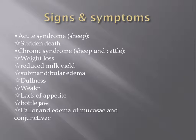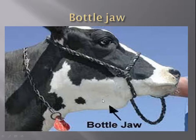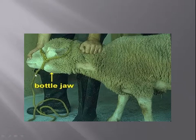There could be pallor and edema of mucosa and conjunctivitis. Here you can see the bottle jaw — it is named bottle jaw because it develops under the jaw of the animal. Here is another picture: this animal is affected with bottle jaw.